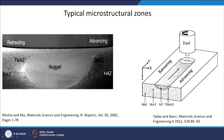This micrograph shows the nugget zone — also called stir zone — at the macro level, so you cannot see very fine grains inside. Then you have the thermomechanically affected zone and then the heat affected zone.